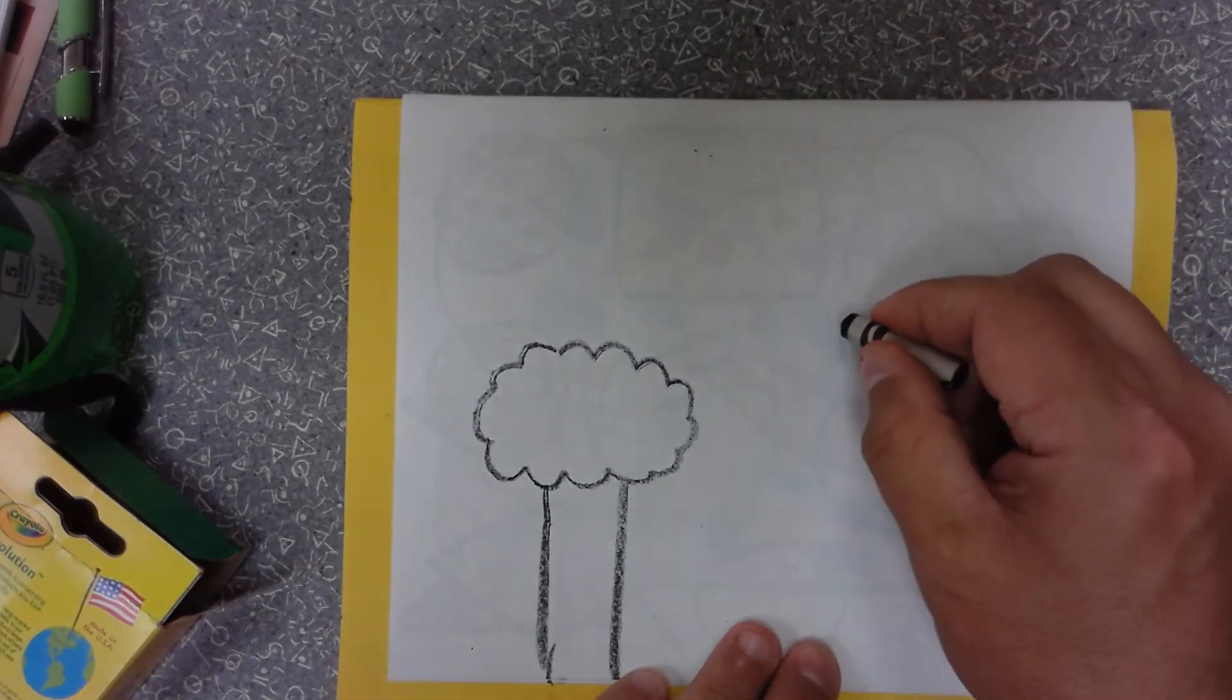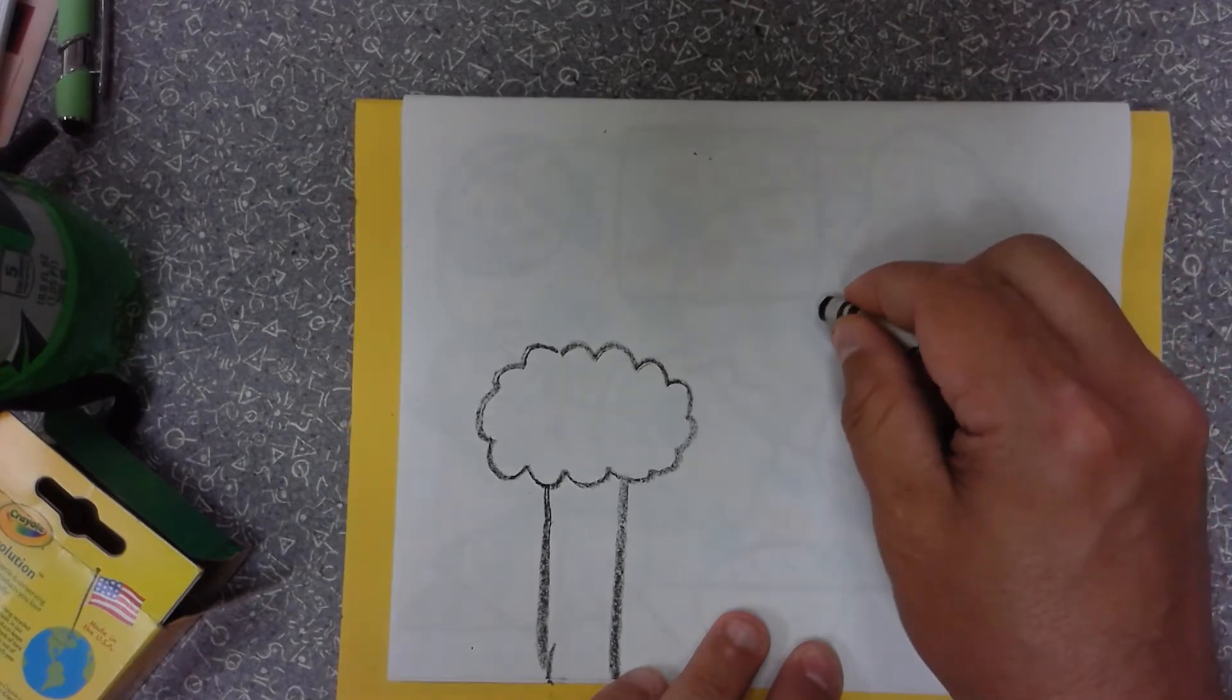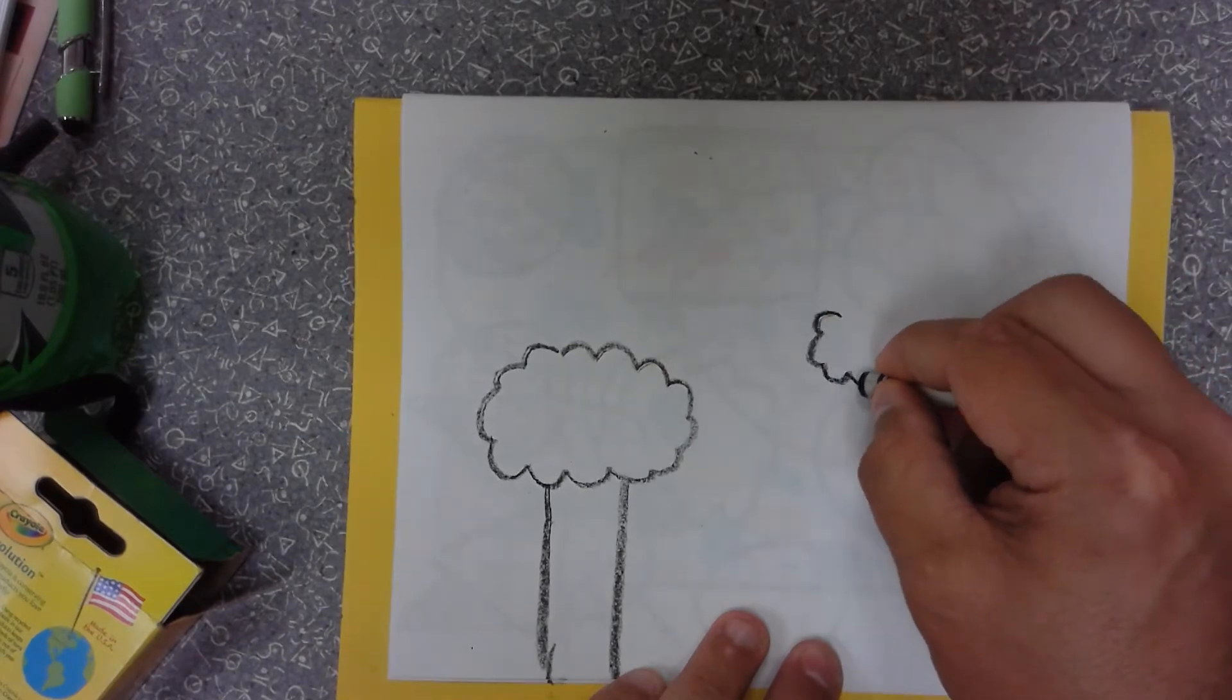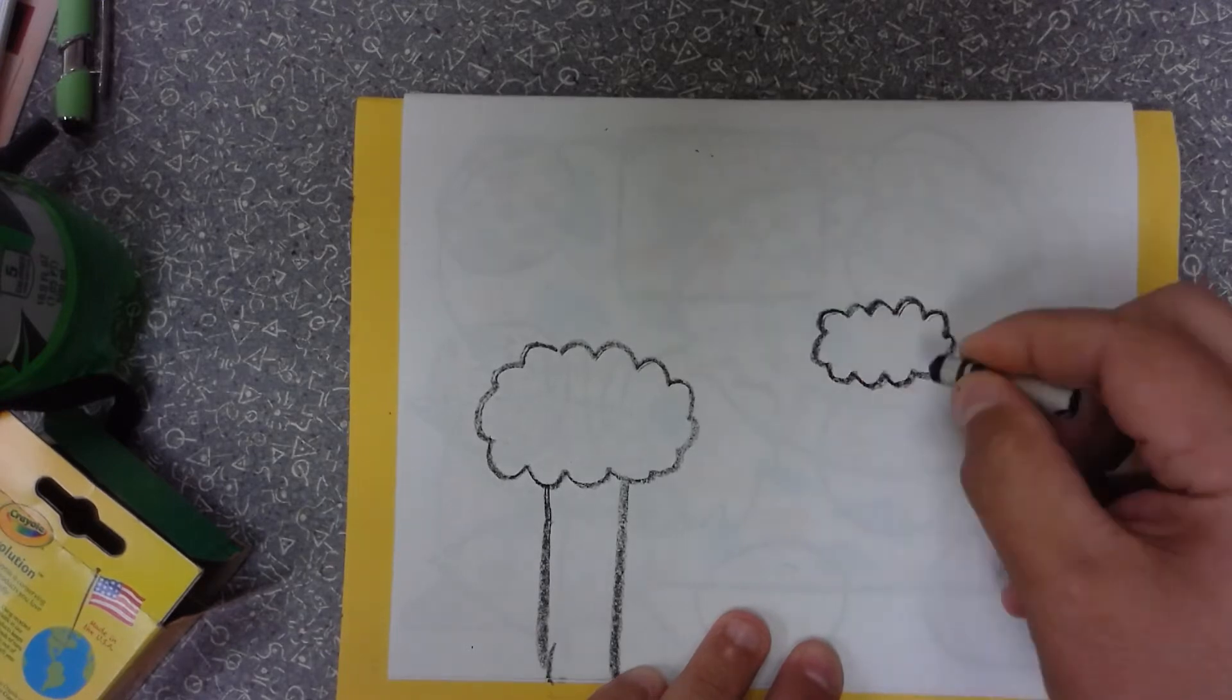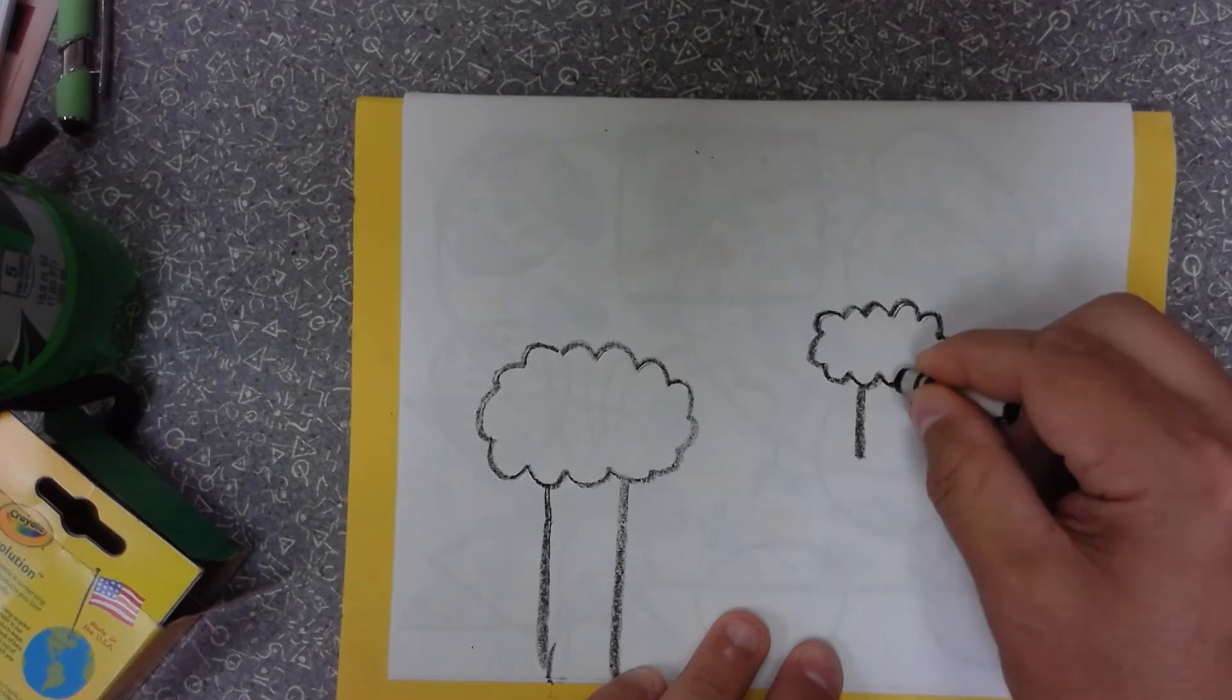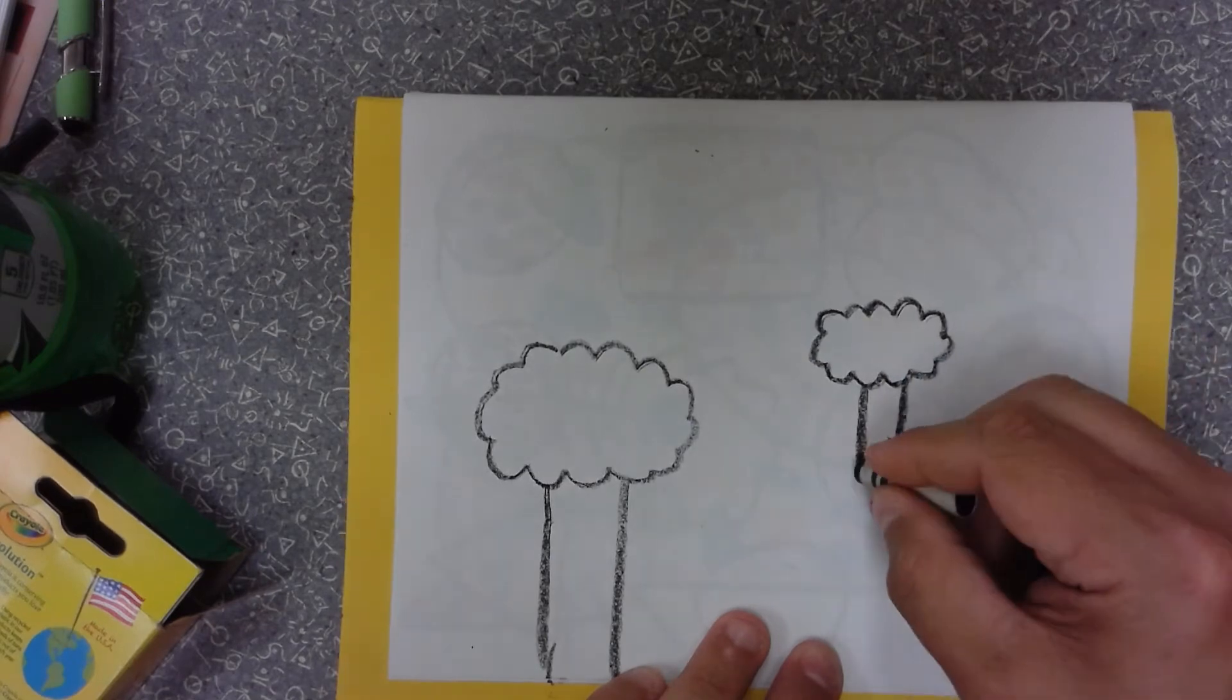Now we're going to do another tree. We're going to go about halfway up the paper and make one about half that size. We're going to make the top of our tree a little smaller, and then we're going to go down with two lines and put them together.